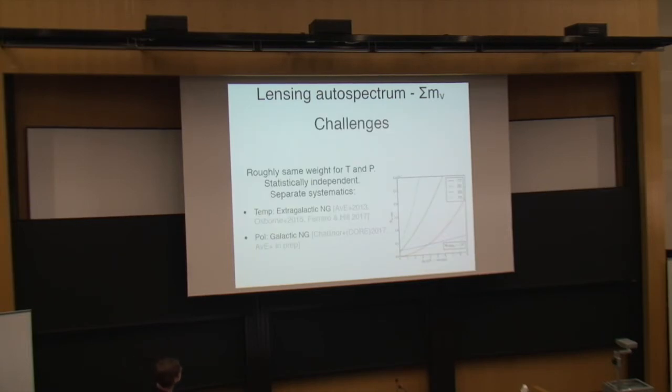There's some challenges to think about here. So Kyle was mentioning using temperature lensing reconstruction and using polarization reconstruction. For Simons Observatory, depending on the final configuration, it should be that these two have about the same weight. So with noise levels somewhere around here, this red curve is the noise for polarization, and the blue curve is the noise for temperature. If you're somewhere in here, the two channels are roughly comparable in sensitivity. That's nice because they're statistically independent, so you can check for consistency, and they're also subject to different systematics.